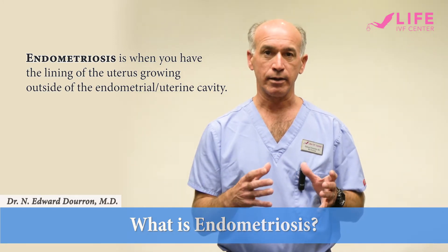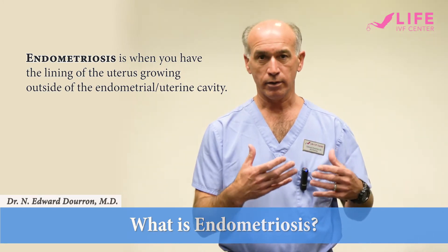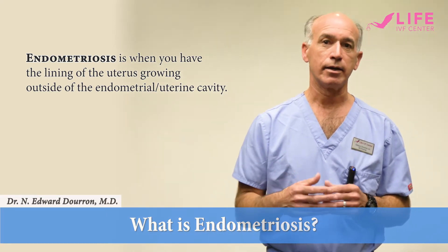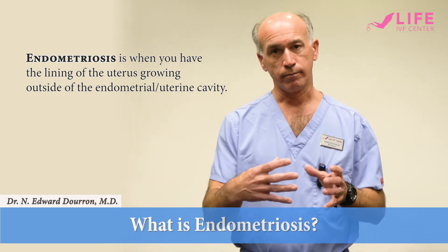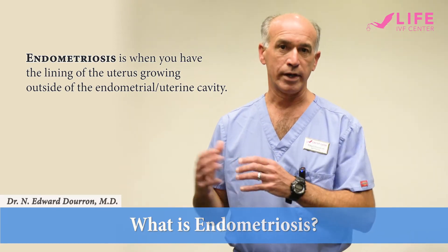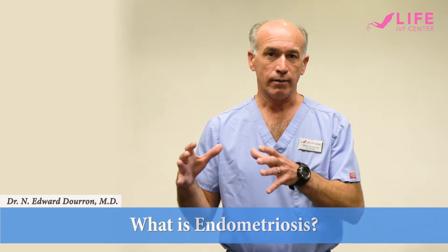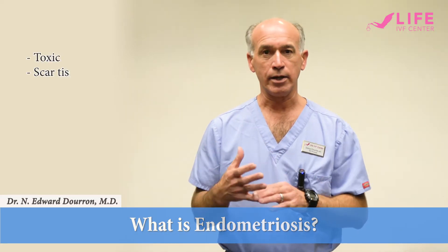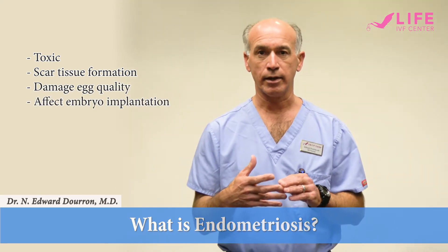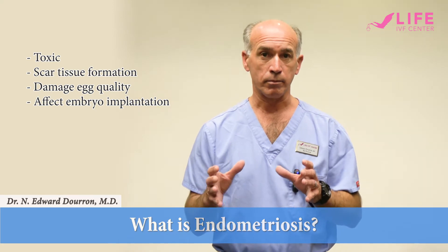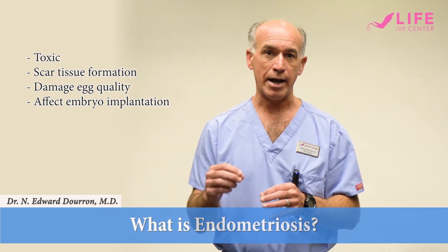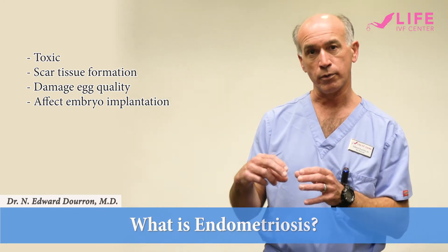The endometrium is the lining that is shed every month when patients do not achieve a pregnancy and have a period. That lining, if it backs up through the fallopian tube, lands in the pelvis and grows — that is what endometriosis is. It is very toxic and can lead to scar tissue formation, it can damage egg quality, and it can affect embryo implantation in the uterus.